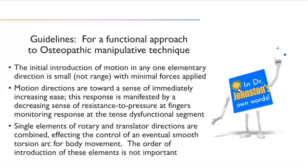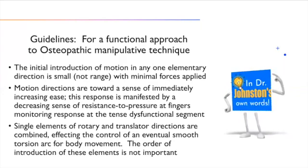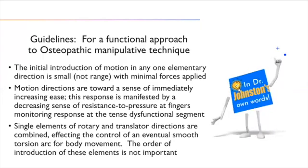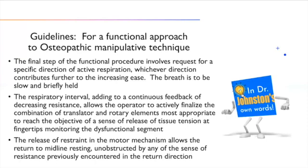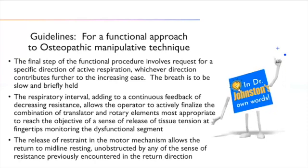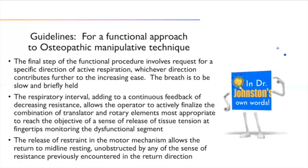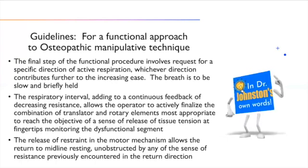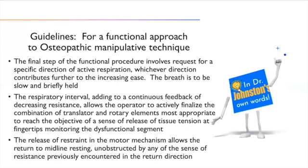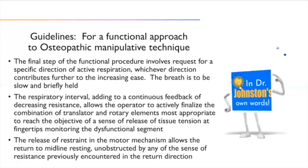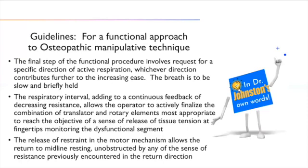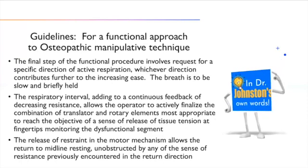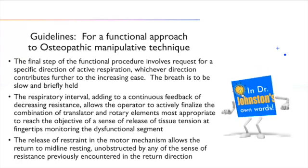Single elements of rotary and transitory directions are combined. So you're going to find these positions of ease and stack them together, affecting a control of a smooth torsion arc for the body movement. The order in which you do these, rotation, side bending, forward-backward bending, is not important. The final step, once you've stacked all the directions together, involves asking the patient for active respiration. Whichever one makes this segment motion easier. The breath is to be slow and briefly held. The respiratory interval, adding to the continuous feedback of decreasing resistance, allows the operator to actively finalize the combination of translator and rotary elements most appropriate to reach the objective of a sense of release of tissue tension at fingertips, monitoring the dysfunctional segment.